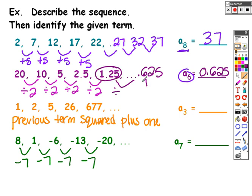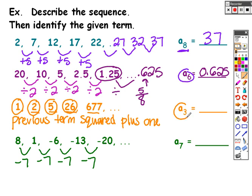Or you can write it as a fraction: 5 fourths divided by 2 is 5 eighths. The third one was maybe a little tricky — you take the previous term and square it, then add 1. So 1 squared plus 1 gives 2, 2 squared plus 1 is 5, 5 squared plus 1 is 26, 26 squared plus 1 is 677. So a sub 3, the value of the third term, is 5. The last one you're subtracting 7 each time. With 5 terms listed, to find a sub 7 you subtract 7 two more times and get negative 34.